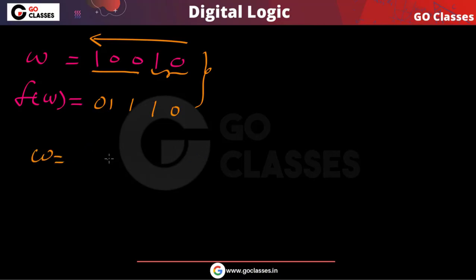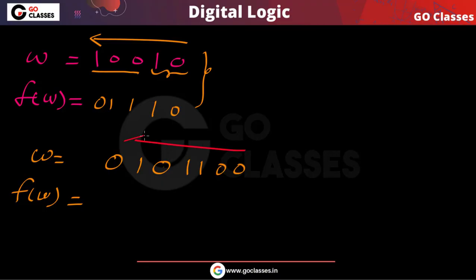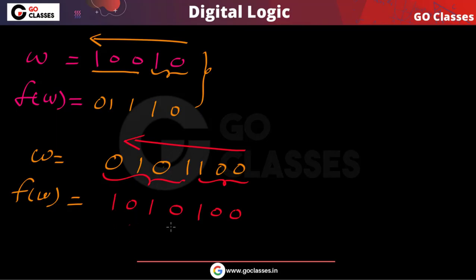Let me take one more example. Consider the string 0101100. To find the 2's complement, go from right to left, and till the first 1, you leave it as it is. After the first 1, you do the complement. This is how you can find the 2's complement.